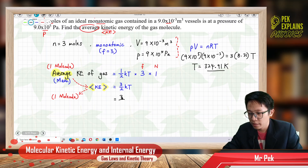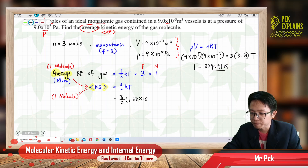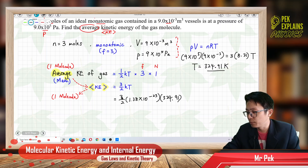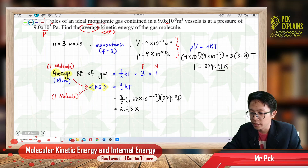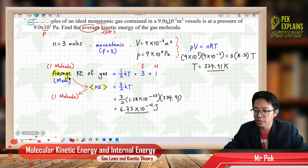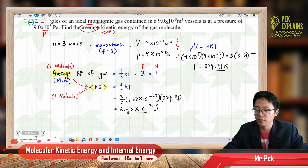After you get the temperature in Kelvin, substitute into the formula: (3/2) × K × T. The value of K from the list of constants is 1.38×10⁻²³. Times the temperature 324.91 Kelvin. The answer is 6.73×10⁻²¹ Joule. That is the average kinetic energy for each molecule of gas.